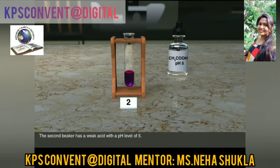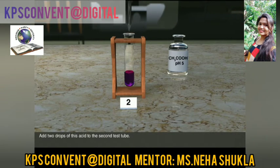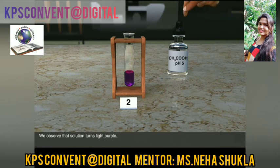The second beaker has a weak acid with a pH level of 5. Add 2 drops of this acid to the second test tube. We observe that the solution turns light purple.